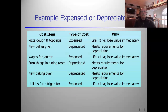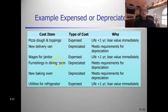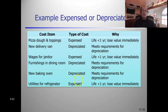Examples of what's expensed versus depreciated: pizza dough and toppings in a pizza business are expensed; a delivery van is depreciated. Wages are expensed; furnishings with a life longer than a year are depreciated. A new oven is depreciated; utilities for a refrigerator are expensed, while the refrigerator itself is depreciated.